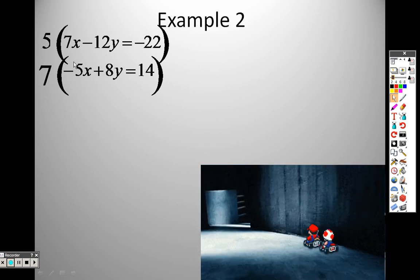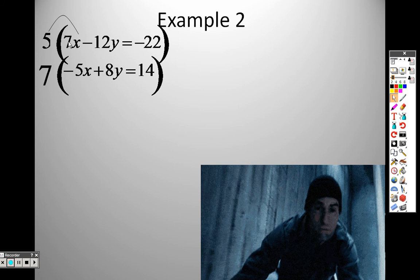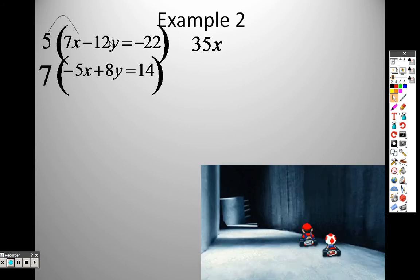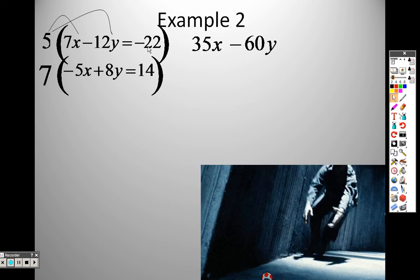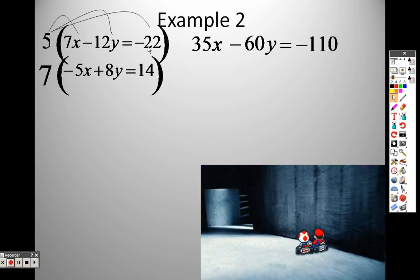All I need to do is distribute. 5 times 7, 35x. 5 times negative 12, negative 60y. 5 times negative 22, negative 110.